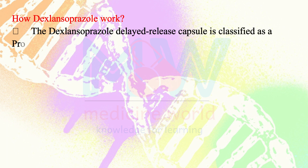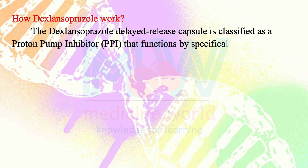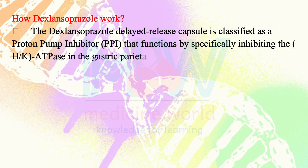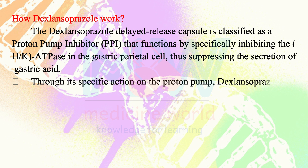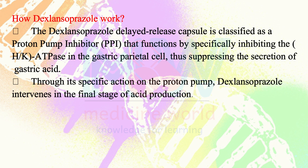Now we will discuss the mode of action of dexlansoprazole. The dexlansoprazole delayed-release capsule is classified as a proton pump inhibitor (PPI) that functions by specifically inhibiting the hydrogen-potassium ATPase in the gastric parietal cell, thus suppressing the secretion of gastric acid. Through its specific action on the proton pump, dexlansoprazole intervenes in the final stage of acid production.